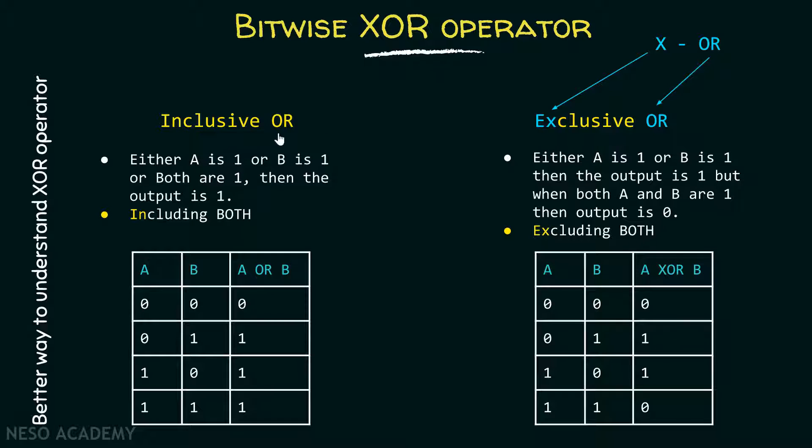According to inclusive OR operator, when either A is one or B is one or both are one, then the output is one. Suppose A and B are representing one bit of information. Either A is one or B is one, output is simply one. But when both of them are one, then also the output is one.